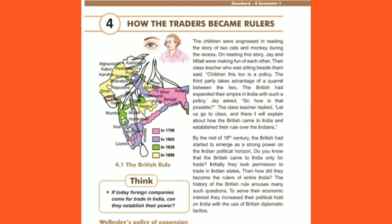Initially, they took permission to trade in the Indian states. And then, how did they become the rulers of India? To serve their economic interests — to earn money — they increased their political involvement. They went into politics and tried to become the government.